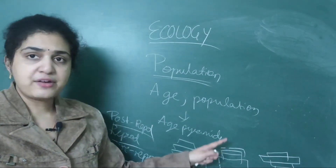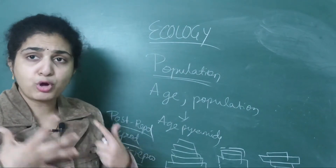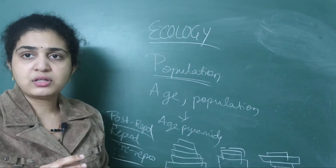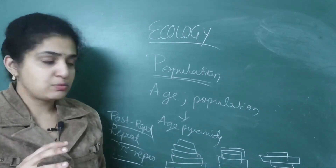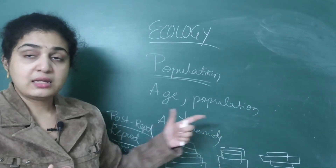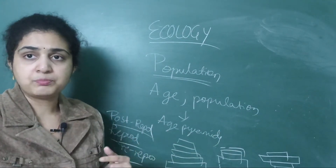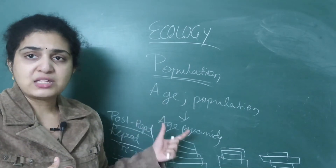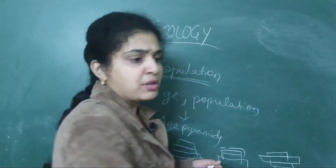In exams, they give you graphs and ask you to identify which is stable, expanding, or declining — this is important from an exam point of view. Every alternate year they ask regarding this. That is why I am stressing more on it. You should be able to identify the graph, or they may ask you to calculate based on it. Age pyramids are classified based on this only.